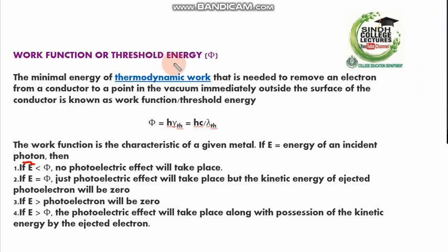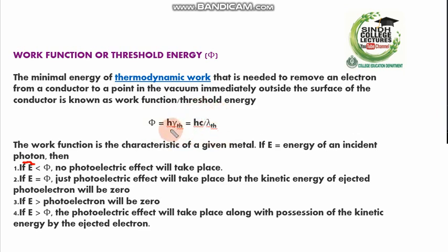This is the work function or threshold energy. If there is a threshold frequency, there must be a minimum energy called the work function — the minimum energy of a photon required by the electron. The formula is φ = hν₀. This is the energy required by an electron to be removed from the metal surface. You can also write this formula as φ = hc/λ by substituting frequency as c divided by λ.